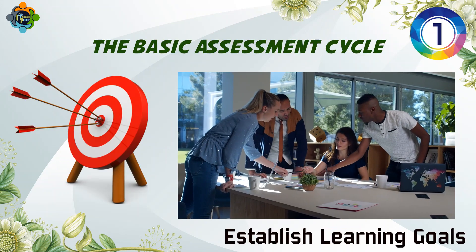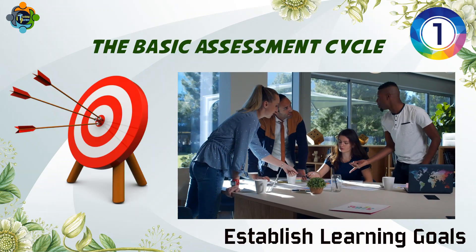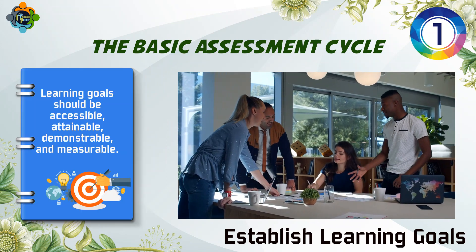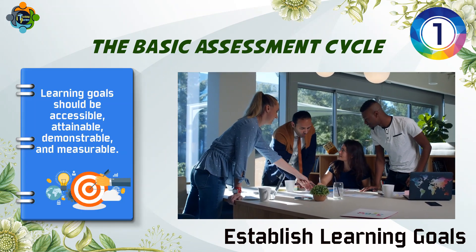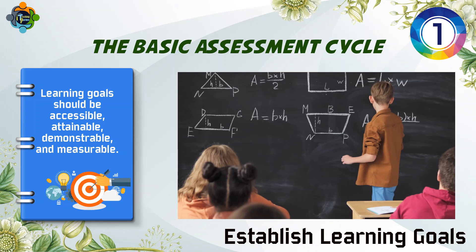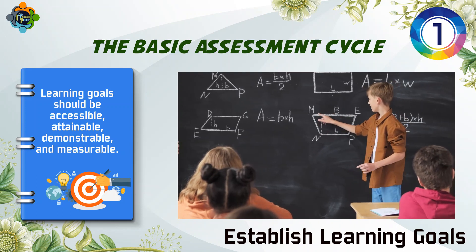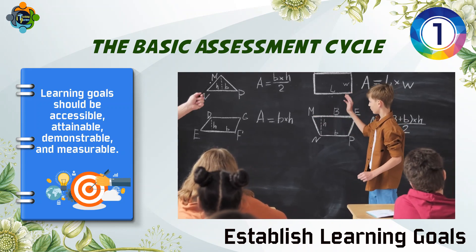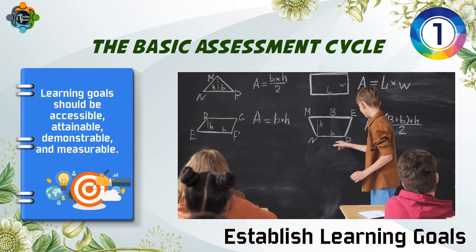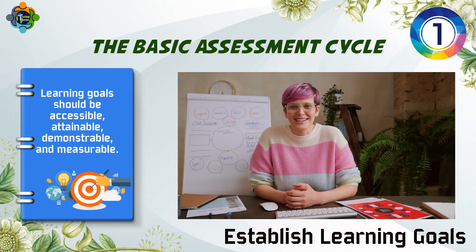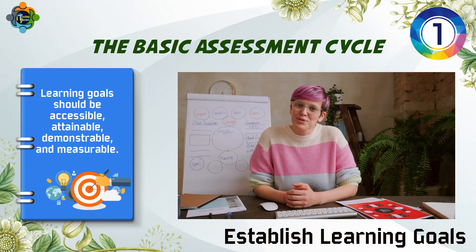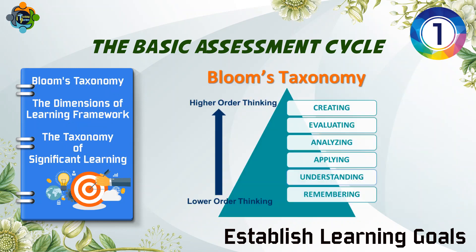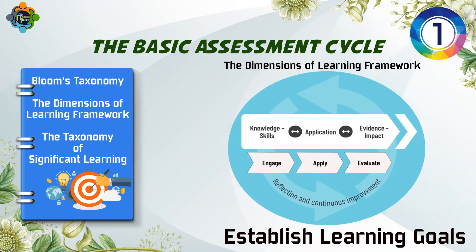Number one: establish learning goals. These should be accessible, attainable, demonstrable, and measurable. They encapsulate high-level learning expectations for students at the course, program, or institutional level. Objectives, on the other hand, are more granular units of learning tied to content or individual lessons.